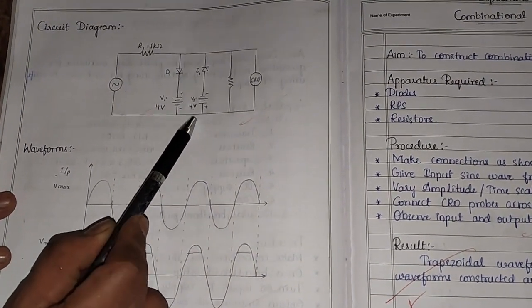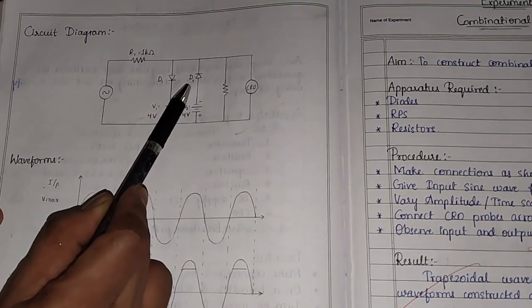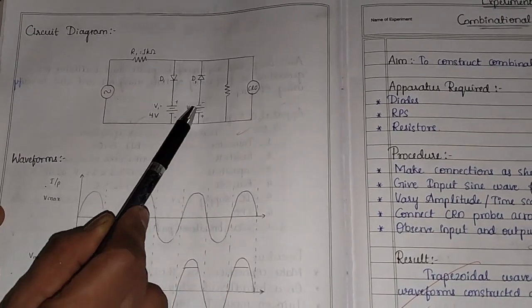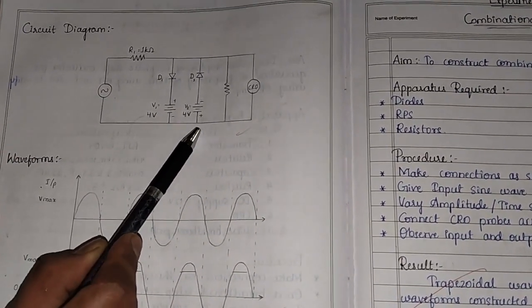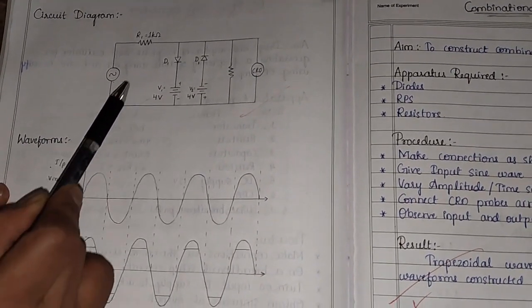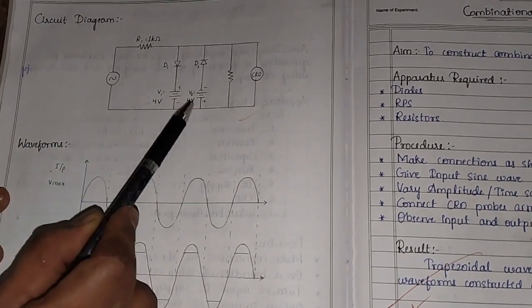Likewise, diode D2's anode is connected to the negative of the power supply, and the positive is connected to ground. The input is applied at D1 and D2.